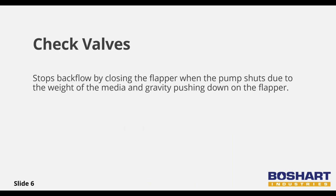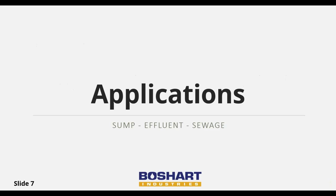A check valve allows a media to flow through the valve but only in one direction. Water can flow through the valve when the pump is running, but when the pump shuts off the water wants to flow back towards the pump. The valve prevents this by allowing the weight of the water to push down on the flapper, causing it to close.